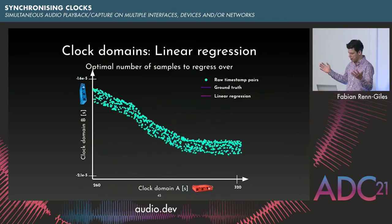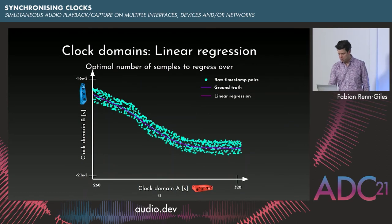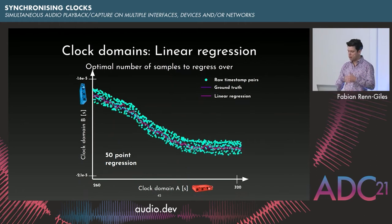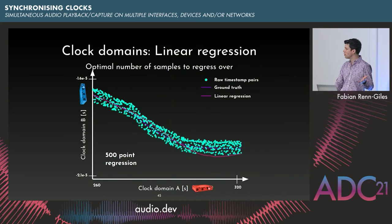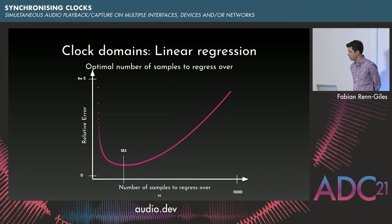Zooming in to see raw timestamp pairs, and with hindsight I can say the real clock convert function was probably the purple line. A five-point linear regression is super noisy — controlling an ASRC with this would be really bad. Increasing the regression window slowly approaches the purple line, but as before, too large a window tracks drift too slowly. At Sing, we found that regressing over the last 200 samples gives the least error for our use case.